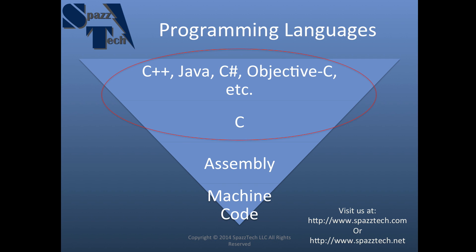Then you have some of the higher level languages. There are a lot of them, but some of the popular ones include C++, Java, C Sharp, Objective-C, and so on. Something to note is that these are really built upon each other — assembly is built on top of machine code, C is built on top of that so you can access assembly and machine code, and all of these higher-level languages make use of or are extensions of C. So if it works in C, you can probably use it in one of the higher level languages in some form.